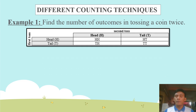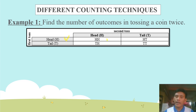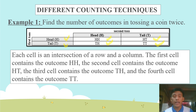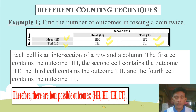The result for head — it could be head-head or head-tail. For tail, it could be tail-head or tail-tail. Each cell is an intersection of a row and a column. The first cell contains the outcome head-head, the second head-tail, the third tail-head, and the fourth tail-tail. Therefore, there are four possible outcomes: head-head, head-tail, tail-head, and tail-tail.